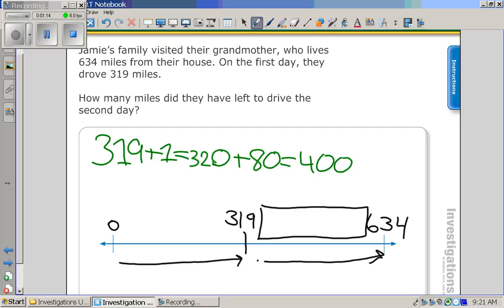400 plus 600. Okay, we're not trying to get to a thousand though, we're trying to get to 634. So let's start with that 400, we want to get to 634.